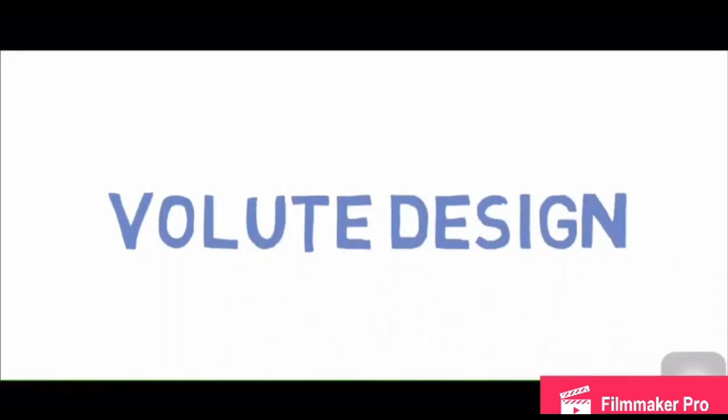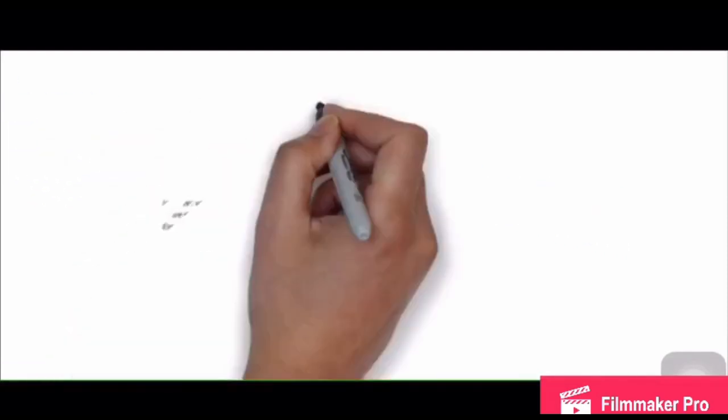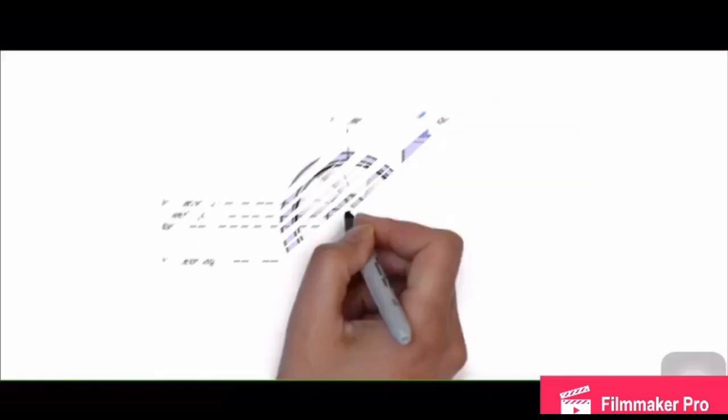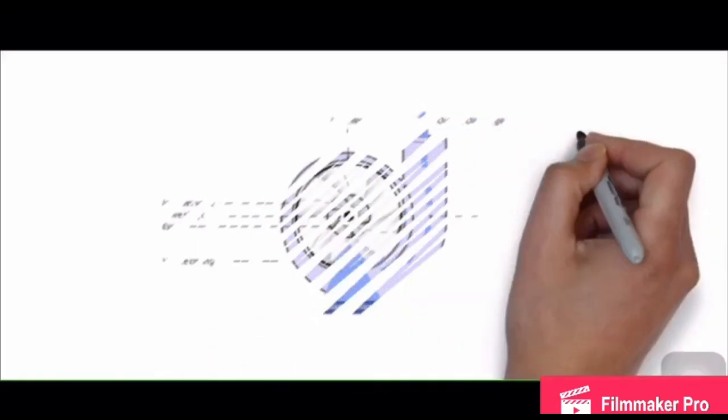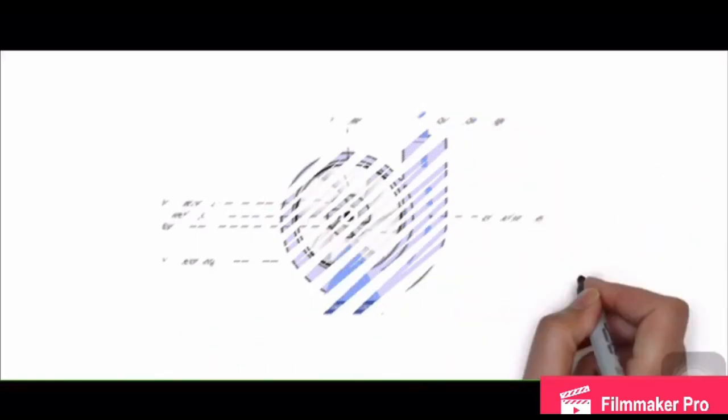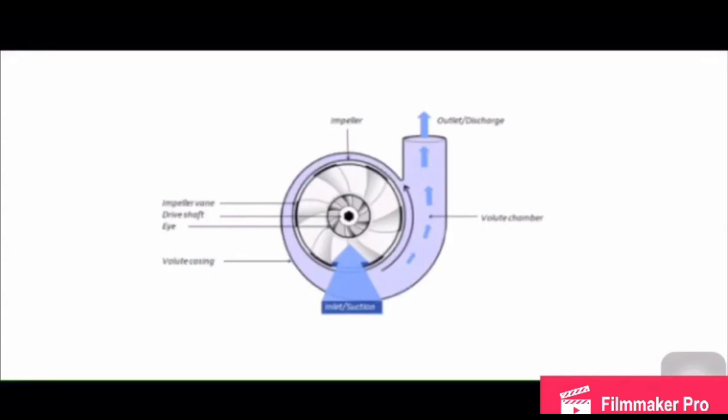For volute design, the impeller offset creates a curved funnel with an increasing cross-sectional area towards the pump outlet. This design causes fluid pressure to increase towards the outlet.